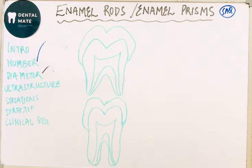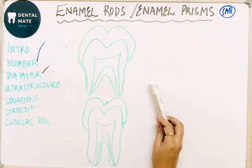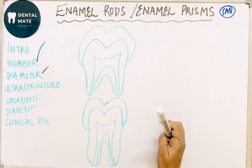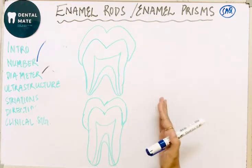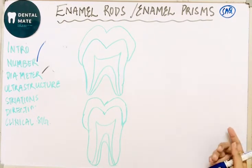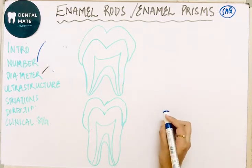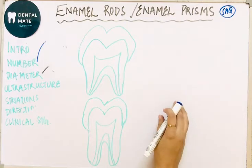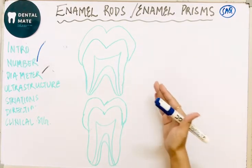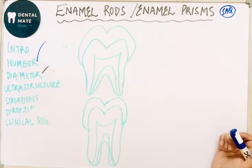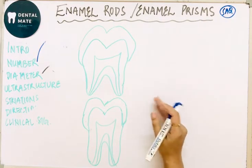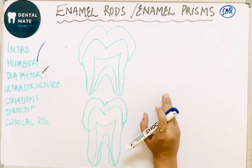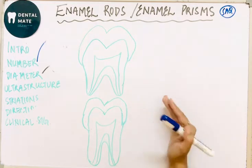Talking about striations — the enamel rods are made of various segments which are separated by certain dark lines, giving them a striated appearance. These cross striations demarcate rod segments in longitudinal section and indicate different time intervals of enamel secretion. Striations are more pronounced in insufficiently calcified enamel.